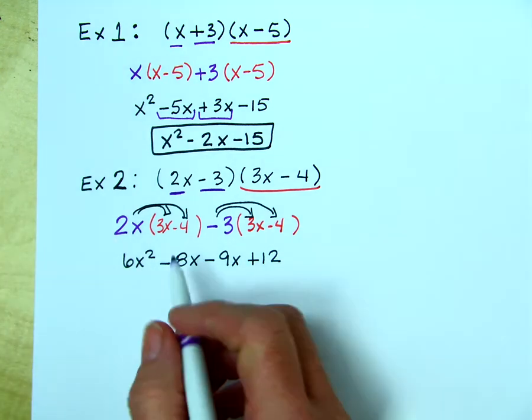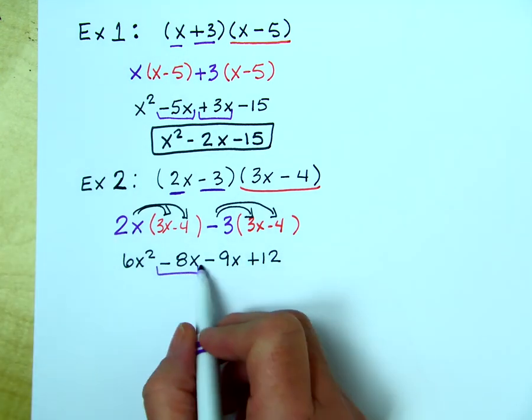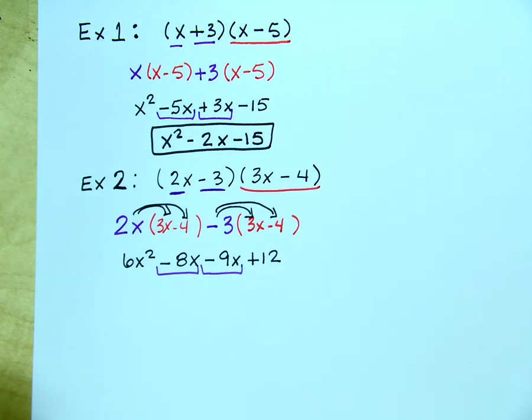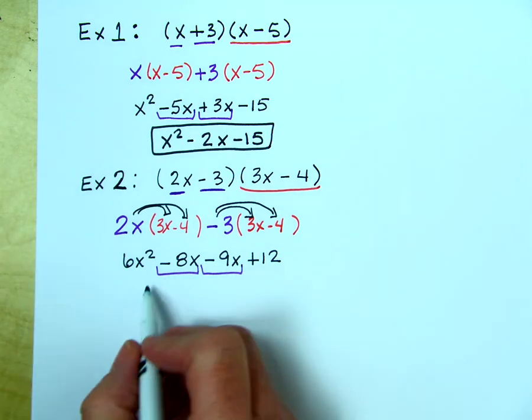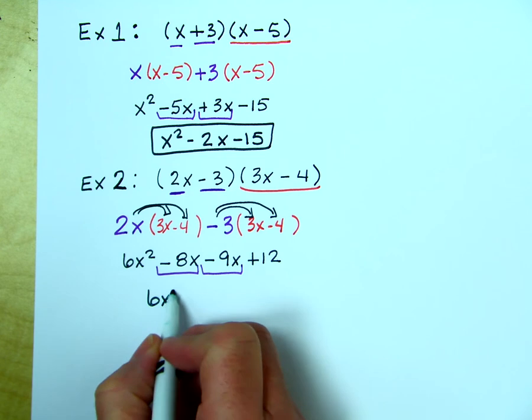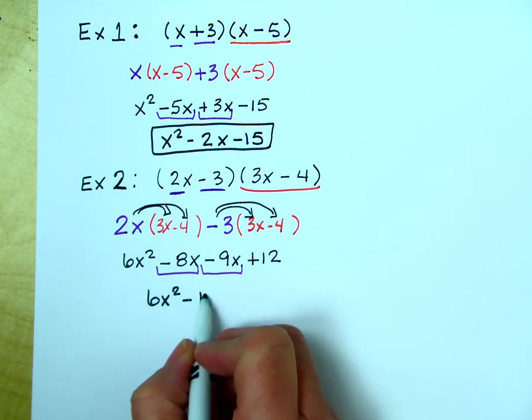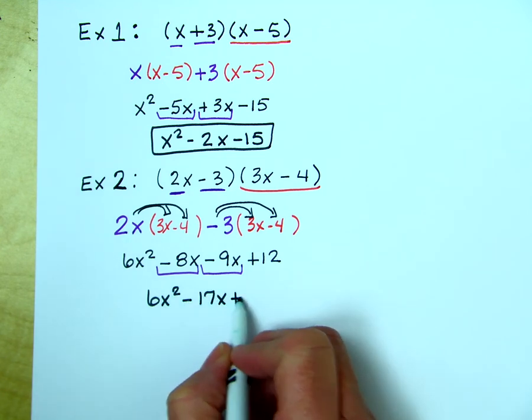Here we have a situation of negative 8x and negative 9x being like terms, so we're going to combine those. So we have 6x squared minus 17x plus 12.